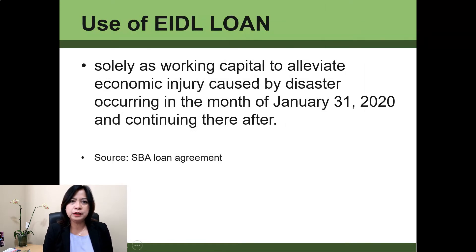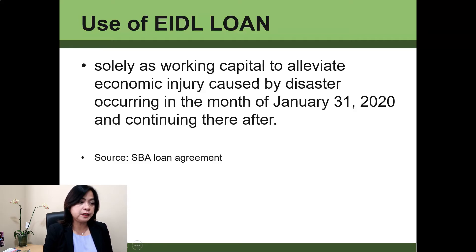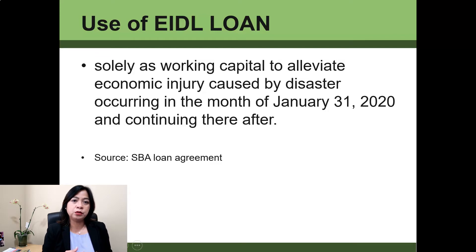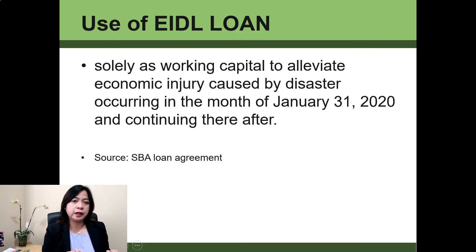First, we need to really understand what the EIDL loan is for. The EIDL loan, per the SBA loan agreement, is solely to be used as working capital to alleviate economic injury caused by disaster occurring in the month of January 31st and continuing thereafter. It's really more a lifeline for business owners to use that EIDL loan to pay those operating expenses. The revenue is not coming in, or not even at the same level as prior to the pandemic, but the expenses are still coming in — the bills don't stop. So you still need to pay for those, and this EIDL loan is really to help you be able to pay for those expenses until you get back on your feet and start generating revenue.